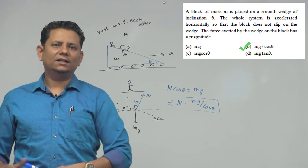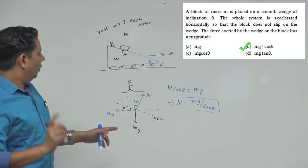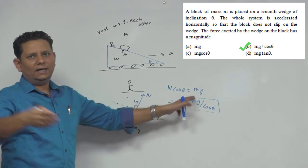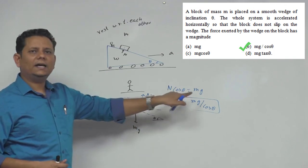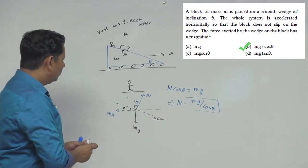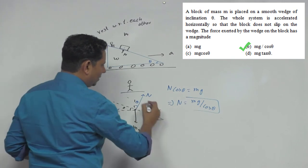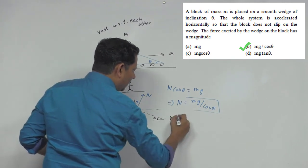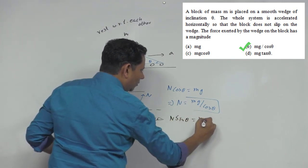Now, if we want to find the acceleration value, we can use the first equation as additional information. The equation is N cos theta equals mg. The other equation we can get by equating forces in the horizontal direction: N sin theta will be equal to ma.